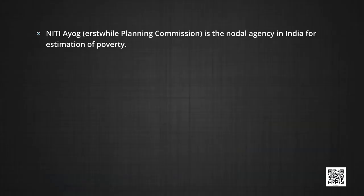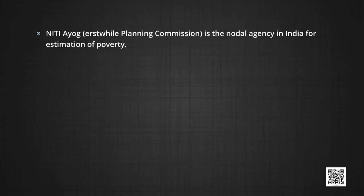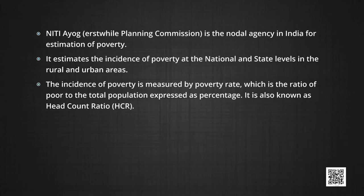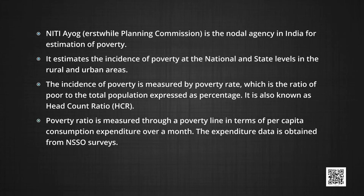Now let us see how poverty is measured in India. Neeti Aayog, erstwhile planning commission, is the nodal agency in India for estimation of poverty. It estimates the incidence of poverty at the national and state levels in rural and urban areas. The incidence of poverty is measured by the poverty rate, which is the ratio of poor to the total population expressed as a percentage. It is also known as head count ratio, that is HCR. Poverty ratio is measured through a poverty line in terms of per capita consumption expenditure over a month, and the expenditure data is obtained from NSSO surveys.